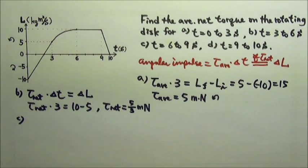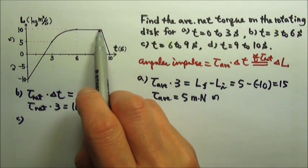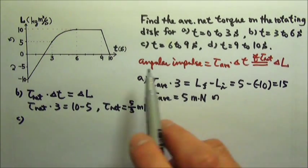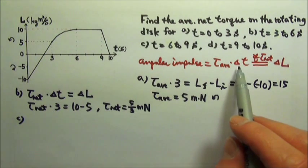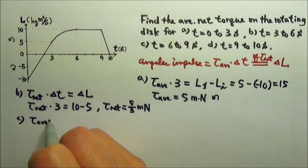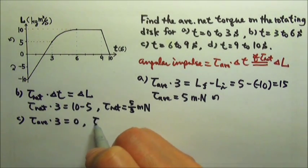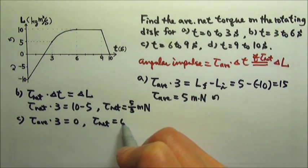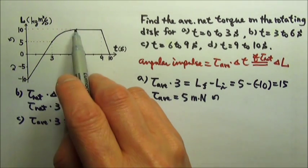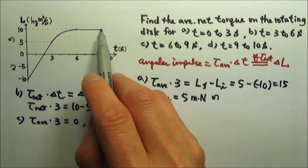Part C. For part C, there is no change in angular momentum. If delta L is zero and the time is three, that means the average torque would also be zero. So average torque times three seconds equals zero. Then there is no net torque acting on it. If the net torque acting on an object is zero, then the angular momentum stays constant.